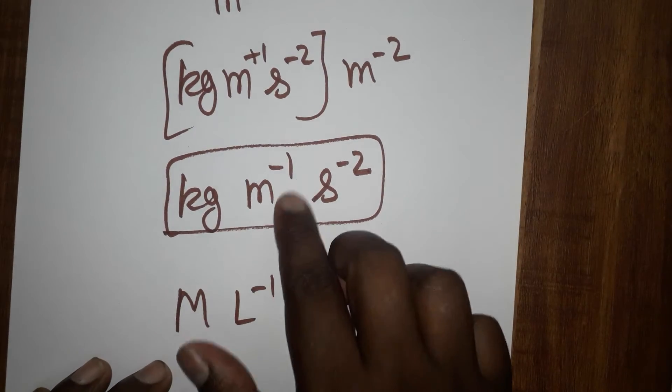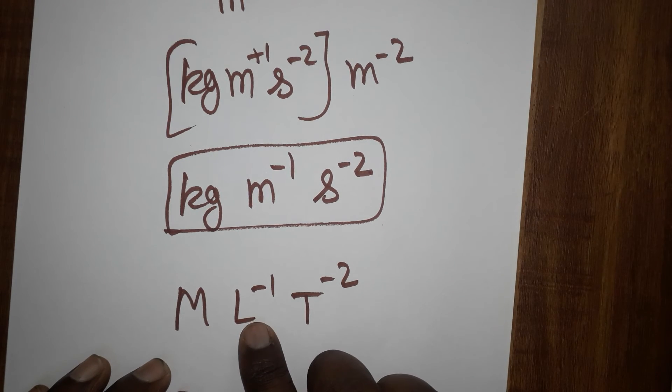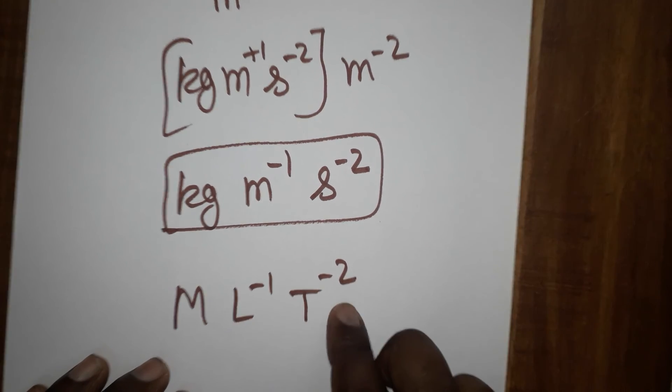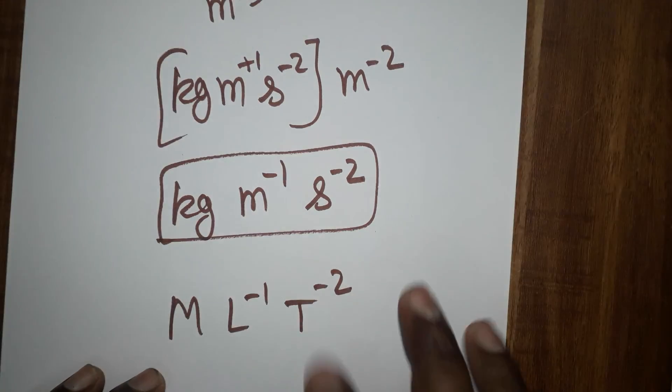Dimensional formula: kg m, length L, time T, M plus 1 L power 2 T power, L power minus 1, T power minus 2. It is the dimensional formula for pressure.